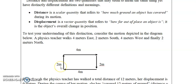So four plus two is six meters, plus four meters is ten meters, plus two meters is twelve meters. The total distance the physics teacher traveled is twelve meters. But when computing displacement, we need to consider the direction of each movement.